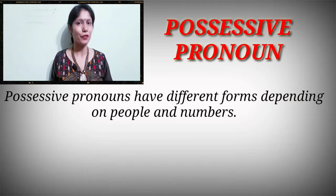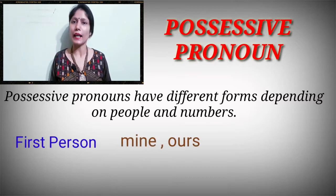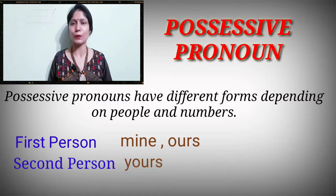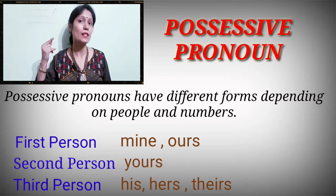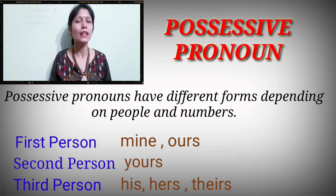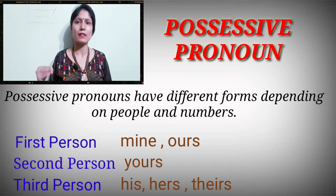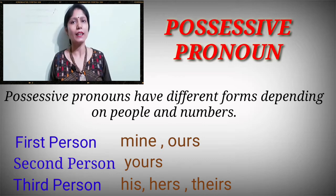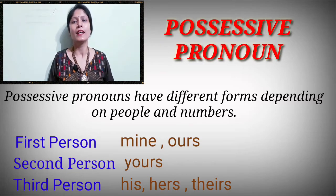Possessive pronouns have different forms depending on person and number. For first person, 'mine' and 'ours' are possessive pronouns. For second person, 'yours' is a possessive pronoun. For third person, 'his,' 'hers,' and 'theirs' are possessive pronouns. If you don't know about the three persons, you can check out my previous video — the link is in the description box. So: mine, ours, yours, his, hers, and theirs are possessive pronouns.